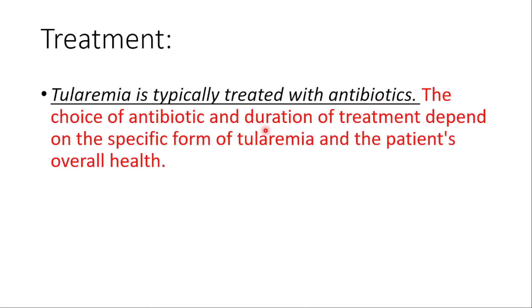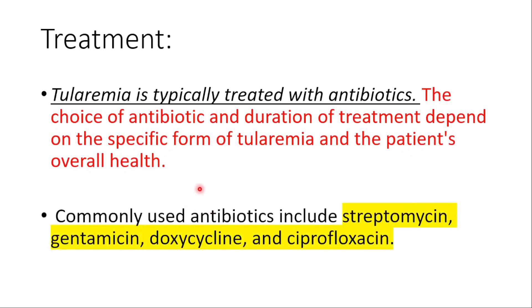The choice of antibiotic and duration of treatment depend on the specific form of tularemia and the patient's overall health. Commonly used antibiotics include streptomycin, gentamicin, doxycycline, and ciprofloxacin.